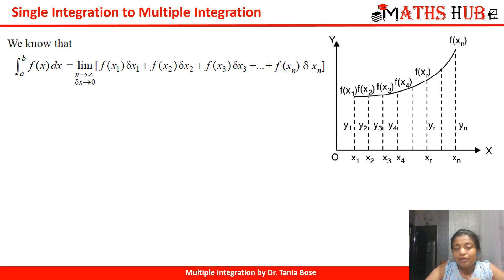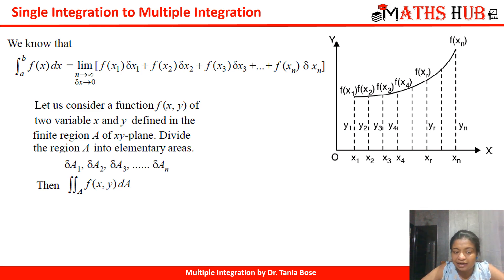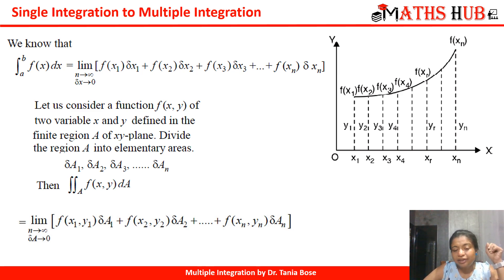Now how do we go to multiple integrals? Whenever we have a multiple integral, we consider a function f(x, y) depending on two variables x and y, defined in a finite region of the x-y plane. We divide the region A into elementary areas delta a1, delta a2, delta a3, and so on. The double integral over A of f(x, y) dA is defined as the limit as n tends to infinity of the sum f(x1,y1)·delta a1 + f(x2,y2)·delta a2 + ... + f(xn,yn)·delta an.